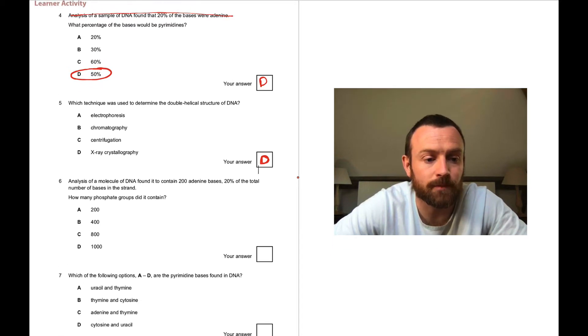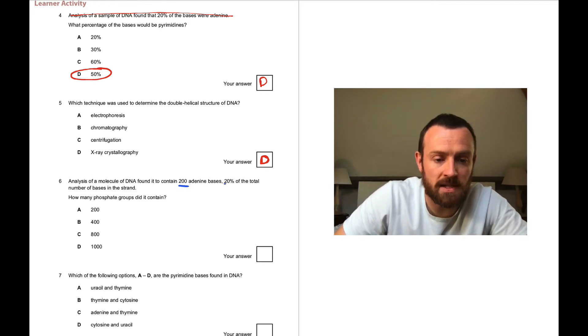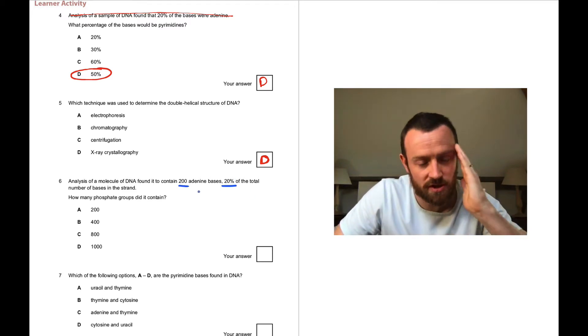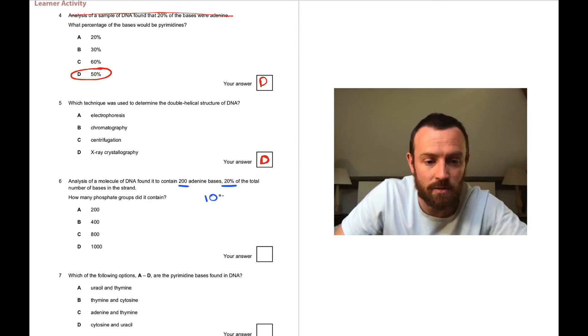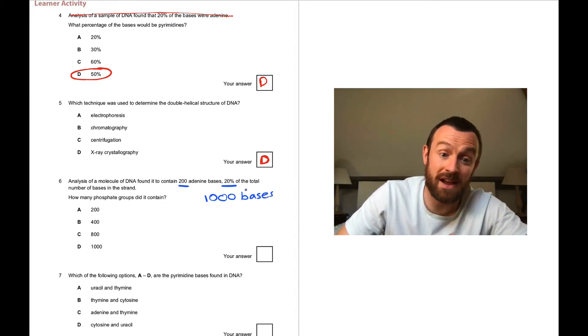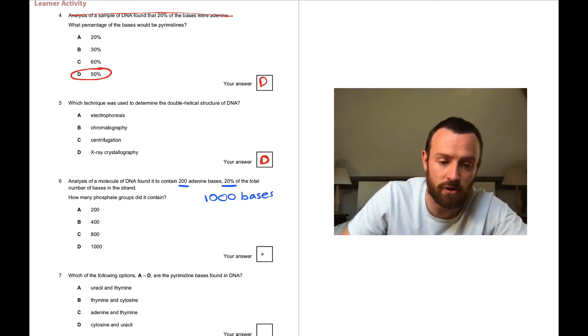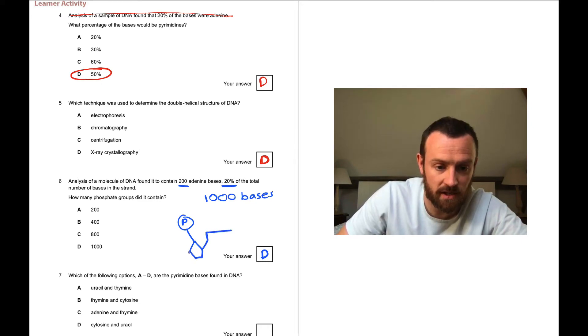Question six: analysis of a molecule of DNA found it contained 200 adenine bases, 20% of the total. How many phosphate groups did it contain? If 200 bases were 20%, then 100% would be a thousand bases. So there are a thousand bases total in the strand, therefore a thousand nucleotides and a thousand phosphate groups. It's D because each nucleotide has a phosphate group, a ribosugar, and the base. This should be attached here - oops, mistake - there we go, that's better.